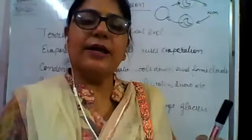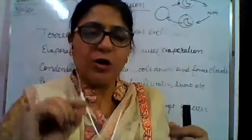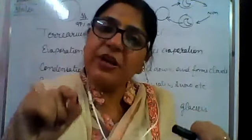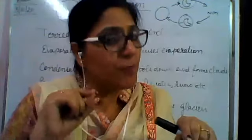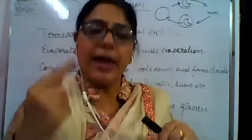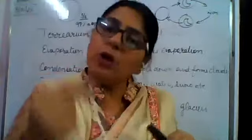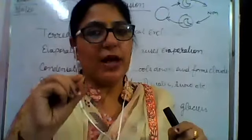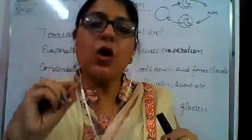The next concept is ocean currents. Ocean currents are the regular movement of water from the base of the ocean in a definite direction. Ocean currents are of two types: warm currents and cold currents. Warm currents originate from the equator, and cold currents originate from the poles. For example, the Labrador current is a cold current, and the Gulf Stream is a warm current.